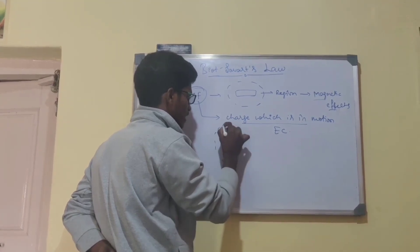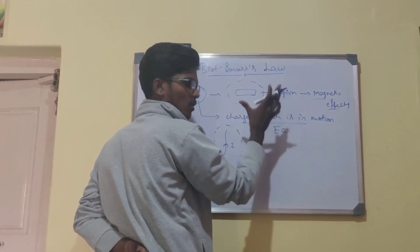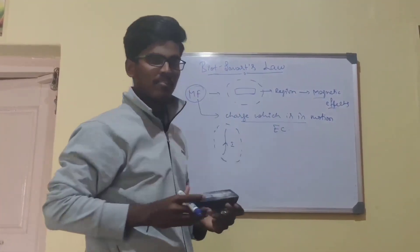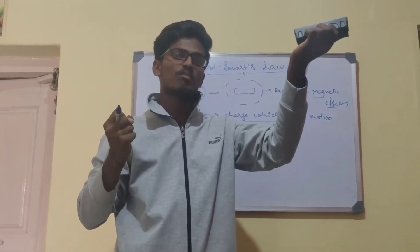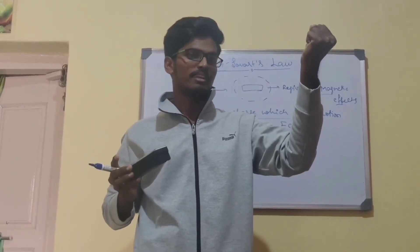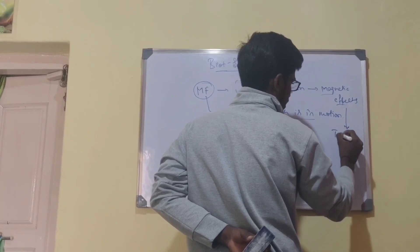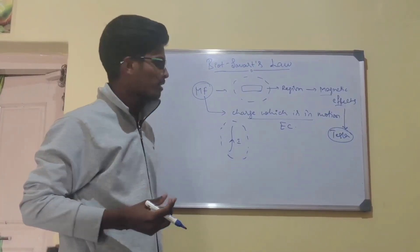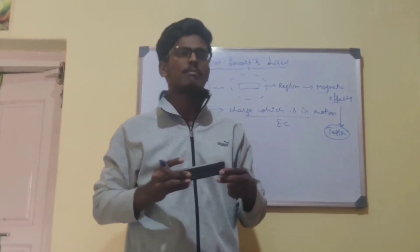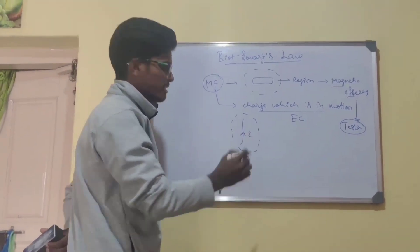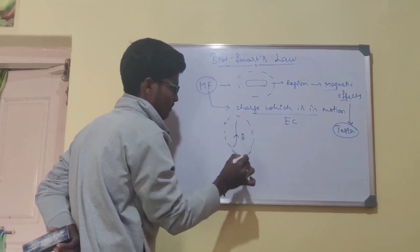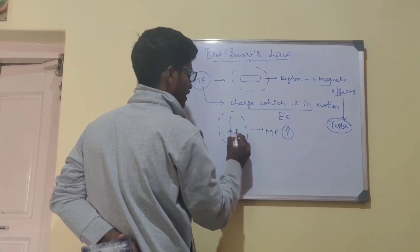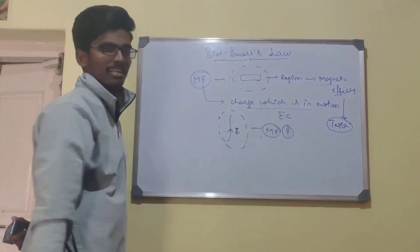Whenever a conductor carries current, it will produce the magnetic field around it. That's why we consider electric current as a source of magnetic field. So what does Biot-Savart Law say? I told you that electric current is the source of magnetic field. For how much quantity of electricity do we get how much Tesla of magnetic field? The magnetic field is generally measured in Tesla units. The relation between the current and the magnetic field can be explained by Biot-Savart Law — that is what Biot-Savart Law says.